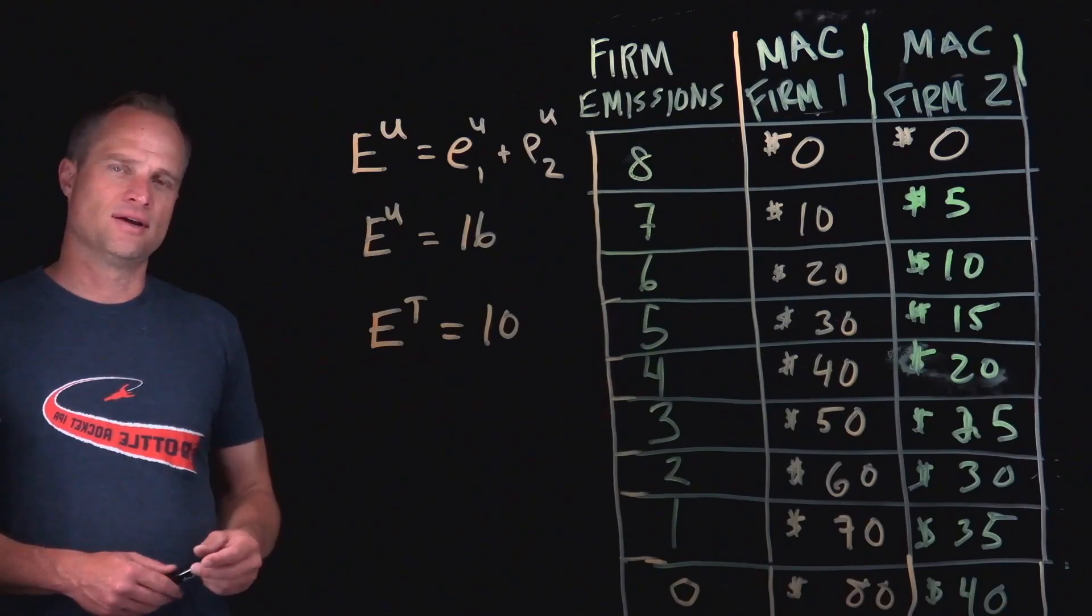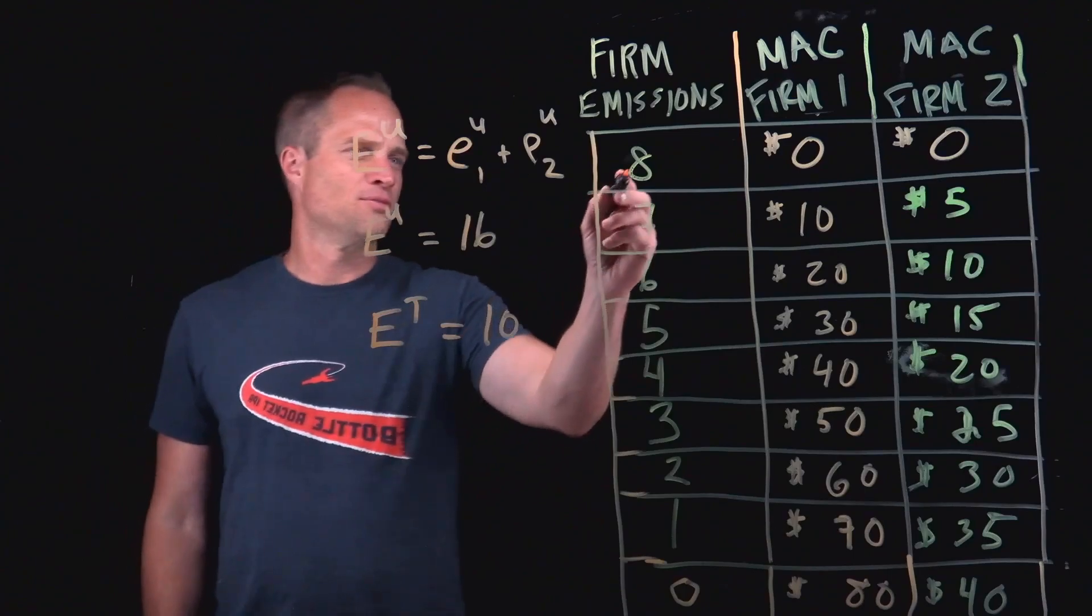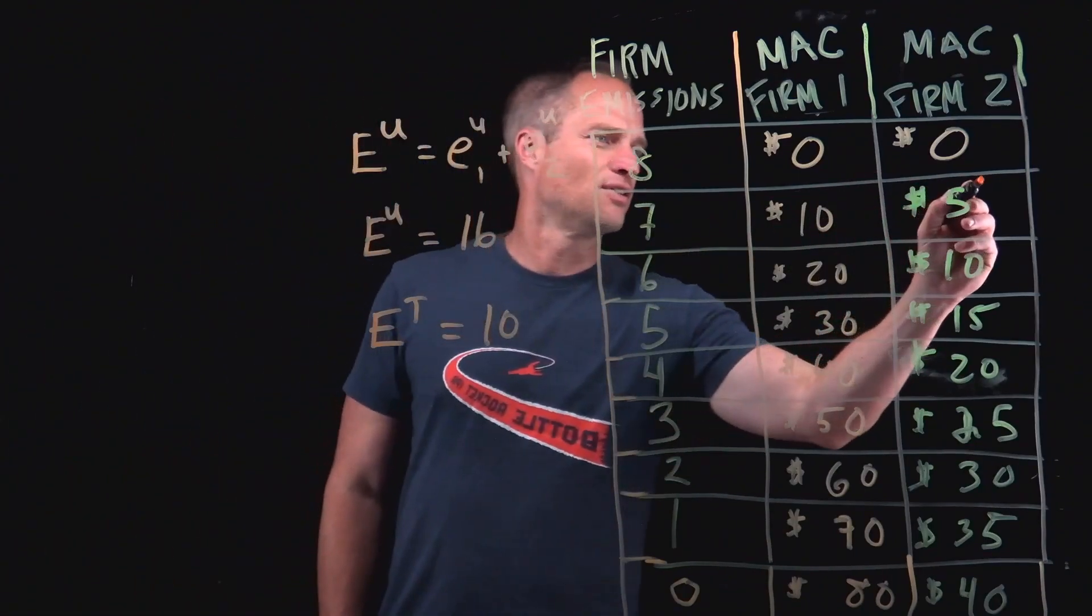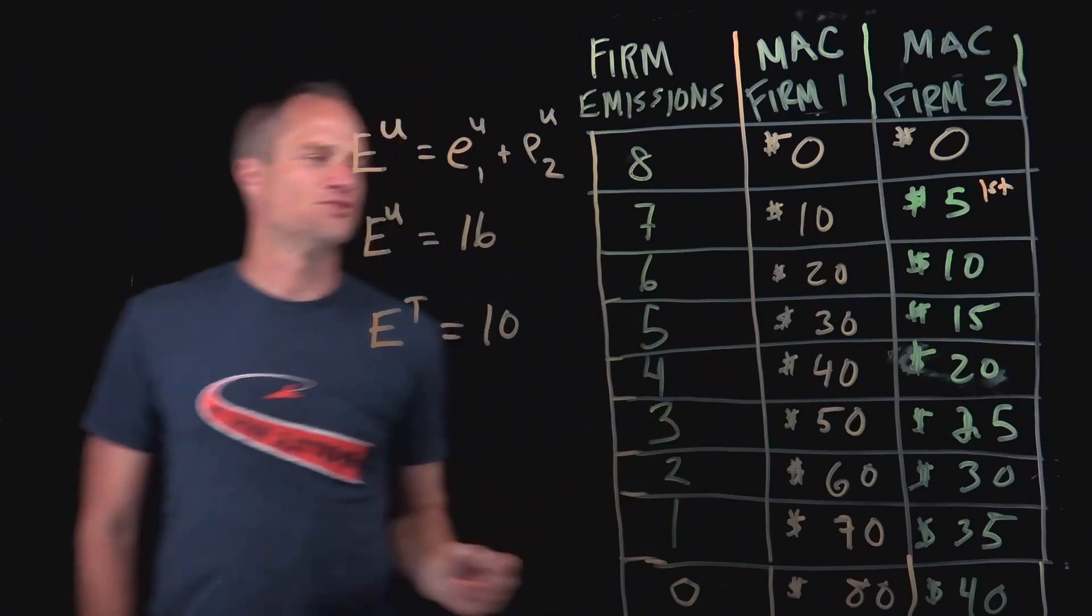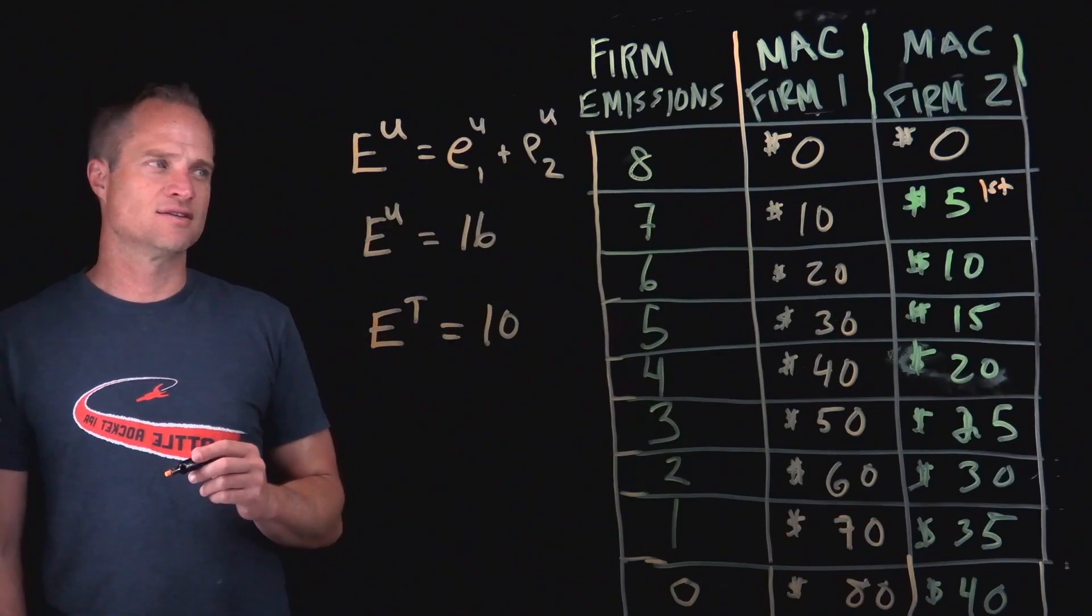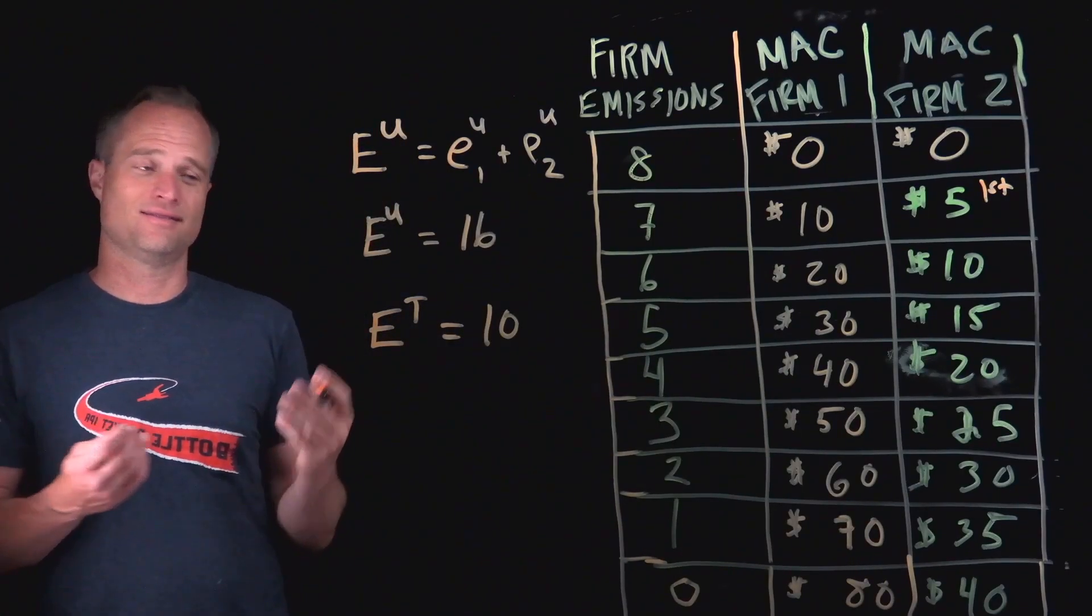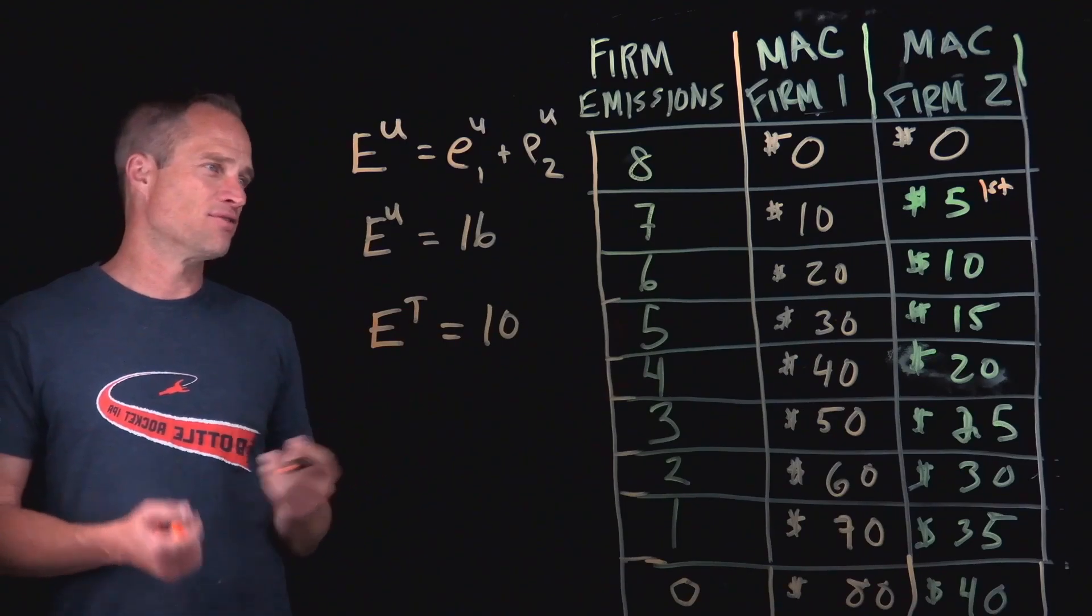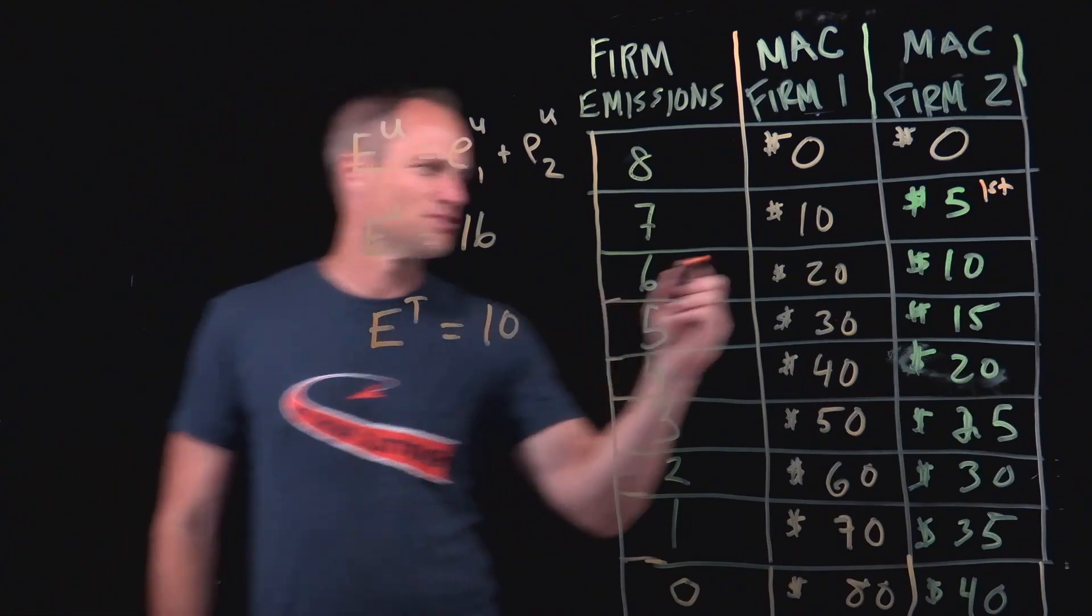First units of abatement are going to be the cheapest. And so if we're moving from eight to seven, that first unit, you could think that firm two can do that the cheapest. And if we're trying to determine how we get this target in the least cost way, that would be the first unit, cheapest way to get the first unit.